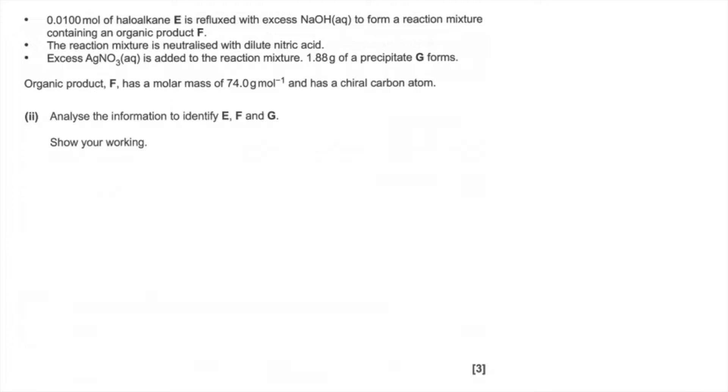So the last part of the question, so we use all this mole data to come up with identifying E, F, and G. So the first thing I'm saying is hydrolysis of haloalkanes produces alcohols. So we know that F is going to be an alcohol, like we saw in that mechanism.